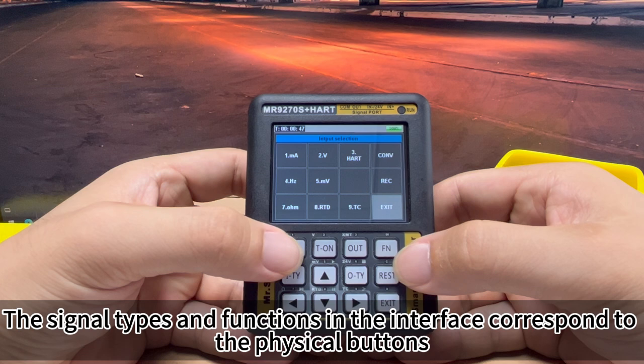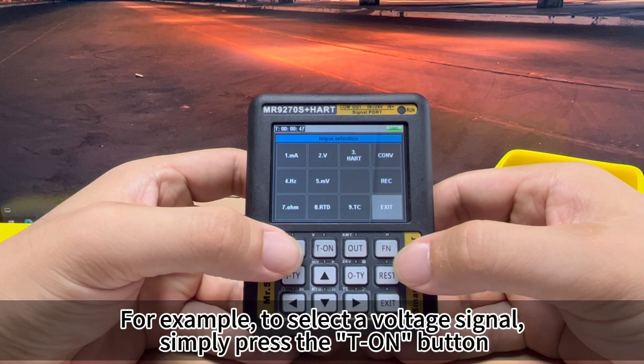The signal types and functions in the interface correspond to the physical buttons. For example, to select a voltage signal, simply press the T-ON button.